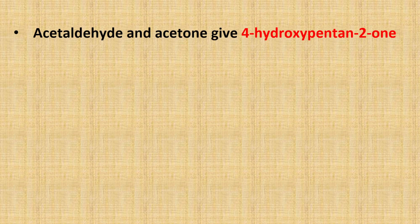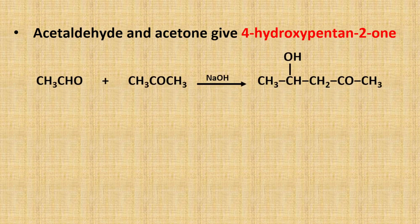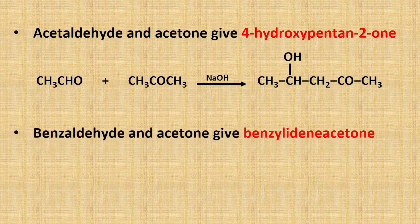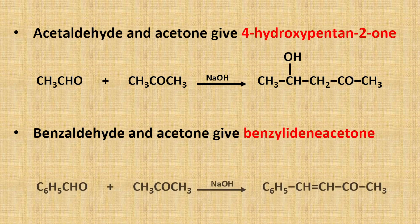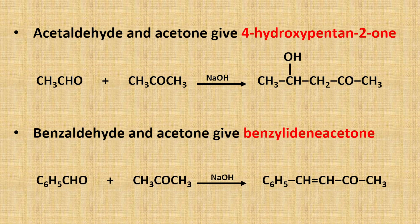For example, acetaldehyde and acetone give 4-hydroxypentane-2-one. The product indicates the formation of a carbanion from acetone in the intermediate step. This is expected as the carbonyl group of a ketone has less additive power than its corresponding aldehyde. So, the aldehyde serves as a substrate for the enolized ketone. Similarly, an aldehyde that has no alpha hydrogen and cannot undergo self-condensation may undergo condensation with the enolized ketone. For example, in the condensation of acetone with benzaldehyde, benzaldehyde does not have any alpha hydrogen, so it cannot undergo self-condensation.